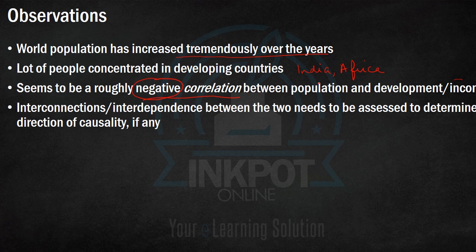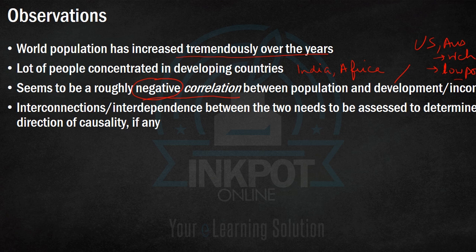We saw that India and Africa had large population sizes, and there seems to be a rough negative correlation between population and development. Countries which have high population, like India and Africa, also have low income, while the US and Australia, which are rich countries, have low population. These interconnections and interdependence between income and population are what we want to assess and understand properly.